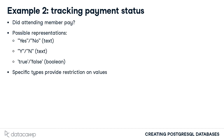A text column, on the other hand, will allow input of values that cannot be easily interpreted as a payment status. For example, how would you handle an input value of the letter D for a member's payment status? This is valid input for a text column, but not representative of valid data for a payment status.